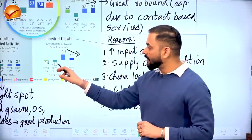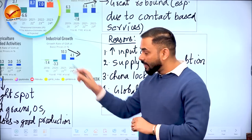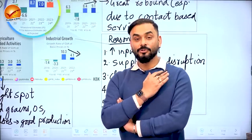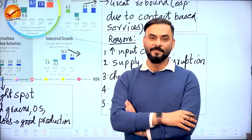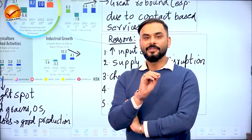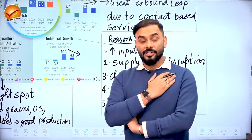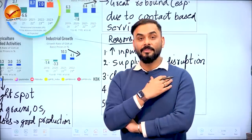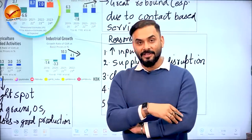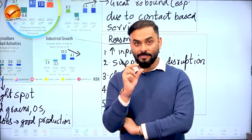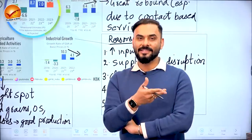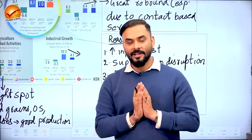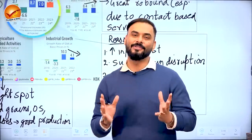In 2020-21, industrial growth was minus 3.3% (negative due to COVID), then it jumped to 10.3%. This is the base effect — when you start from a very low base, even small progress looks very big. Like a marathon runner who goes from last place to 6th, the jump looks impressive. But when already at 10.3% and growth falls to 4.1%, it looks bad because the base effect is gone.